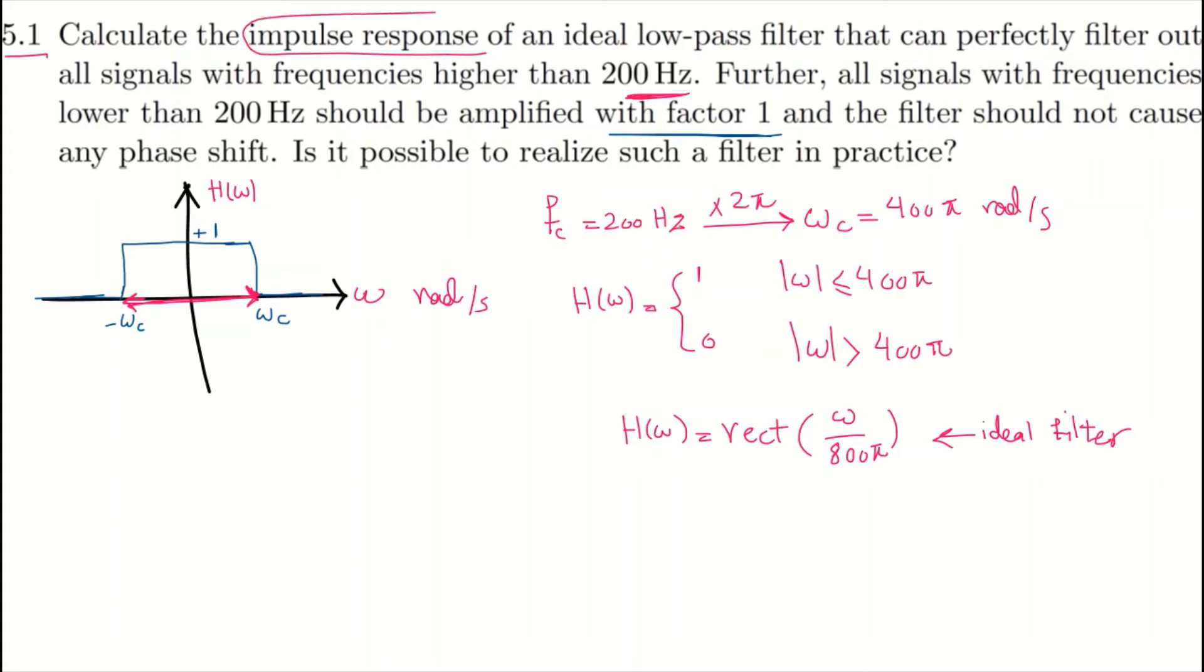This is the expression for the ideal filter described in the question. But we are looking for the impulse response function. You remember from chapter 3 that the impulse response function, h of t, and frequency response are actually a Fourier transform pair. If you take the Fourier transform of h of t, then you get H omega. So if you want the impulse response, you need to take the inverse Fourier transform of frequency response.